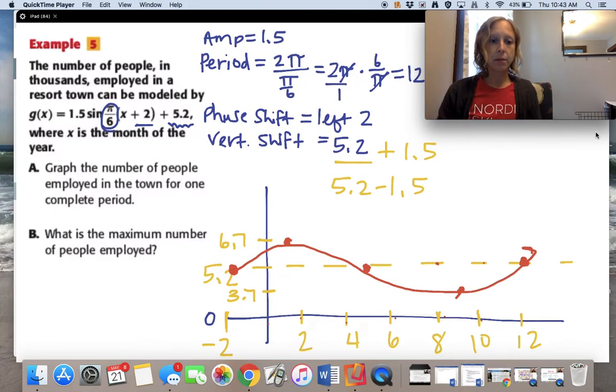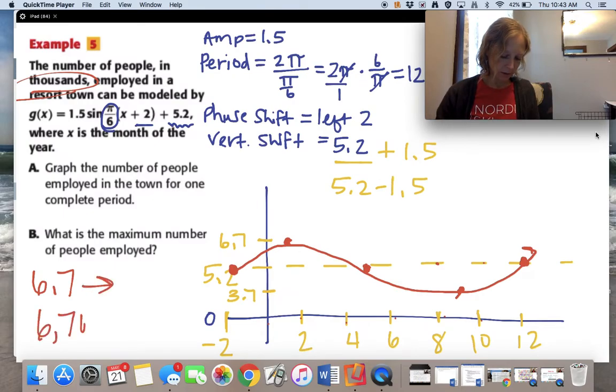Part B, what is the maximum number of people employed? Well, what is the maximum of this graph? It's 6.7, but we are told that this is a graph whose units are in thousands. So, what that means is 6,700 is the maximum number of people.